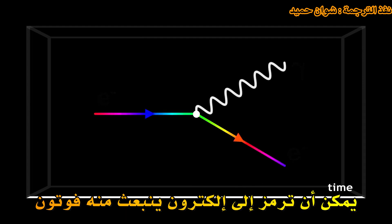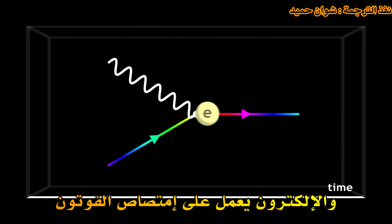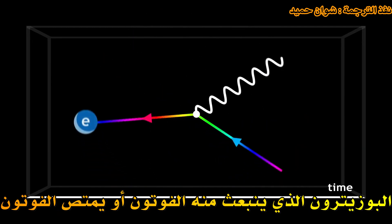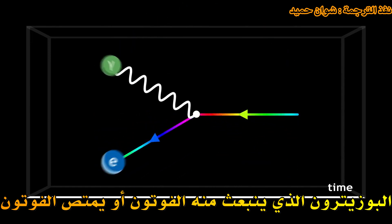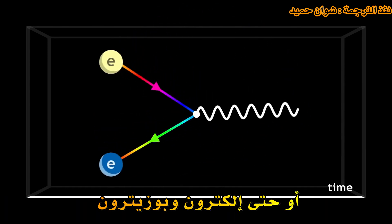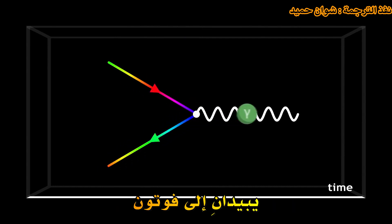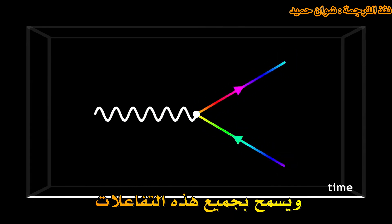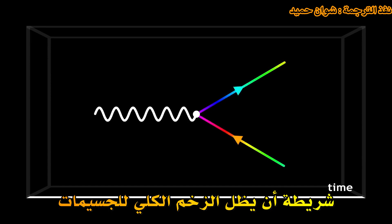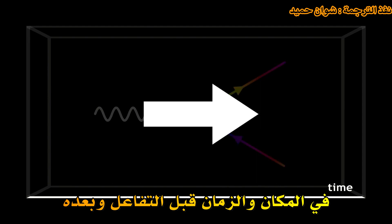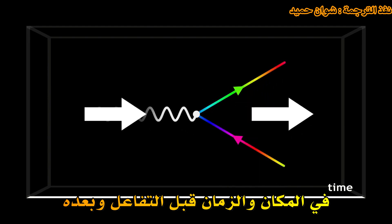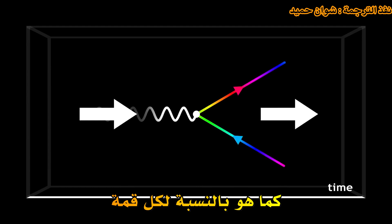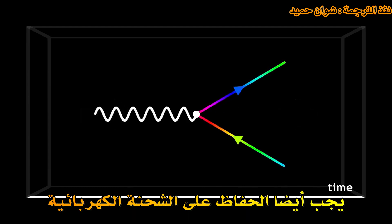Such a vertex can symbolise an electron which emits a photon, an electron which absorbs a photon, a positron which emits a photon or absorbs a photon, or even an electron and a positron which annihilate into a photon, or a photon which converts into an electron-positron pair. All these interactions are allowed, provided that for each vertex the overall momentum of the particles in space and time, before and after the interaction, remains the same. The electric charge must also be conserved.